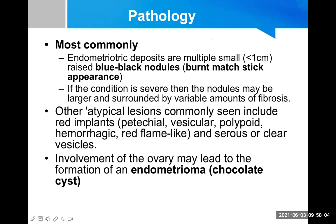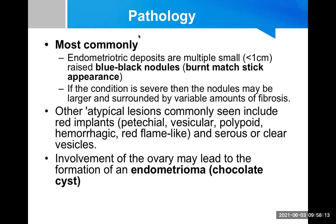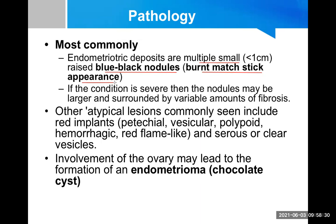Now let's talk about pathology — what actually happens at endometriotic sites. Most commonly, deposits of endometriotic tissue are multiple, small — less than one centimeter — and appear as blue-black nodules with a burned matchstick appearance. This is the classical description. If the condition is severe, the nodules may be larger and surrounded by variable amounts of fibrosis.